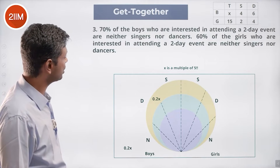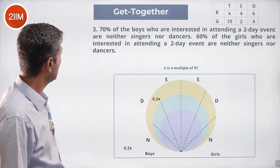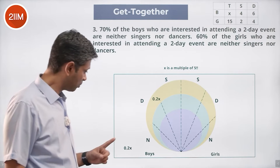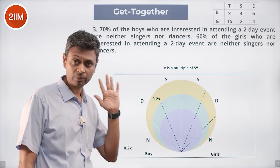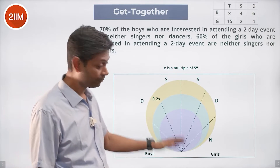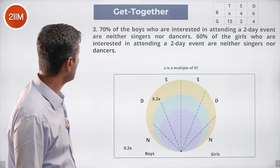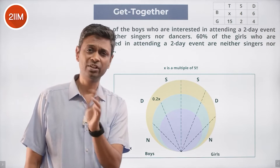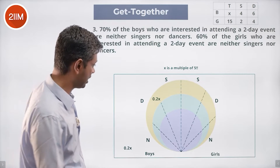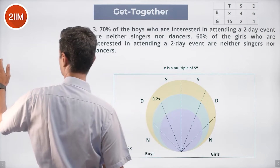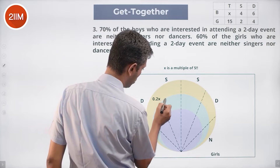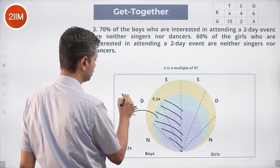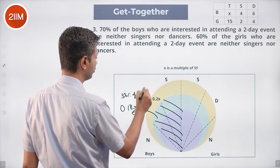70% of the boys who are interested in attending a two-day event are neither singers nor dancers. Of the boys, 0.2X goes away (not interested in one-day), leaving 0.8X; those not interested in two-day go away too — leaving 0.6X for the two-day event. 70% of them are neither singers nor dancers, so 30% of 0.6X — that is 0.18X — are singers or dancers in the two-day event region.